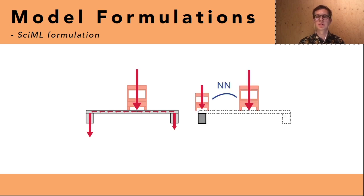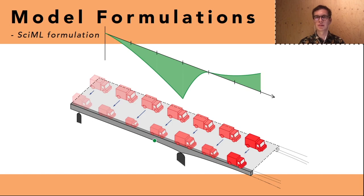For the scientific machine learning formulation we only explicitly model one of the girders using physics and then we use a neural network to approximate what portion of the applied load on the deck goes to one of the girders. This image shows how we make a prediction of an influence line using a scientific machine learning model. At each point where the load is applied the equivalent load on the girder is calculated and then the girder is used to create the influence line prediction. The rest of the bridge is not explicitly modeled.